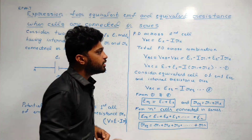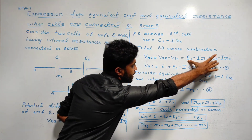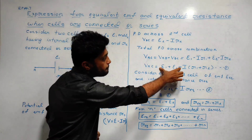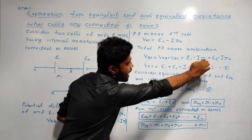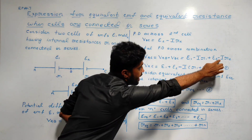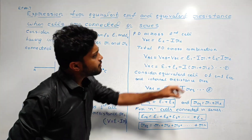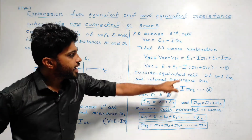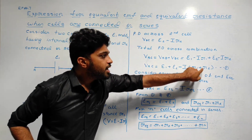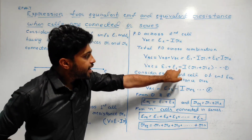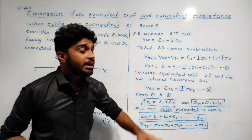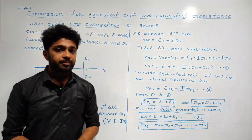VAC is equal to E1 plus E2, minus I times bracket R1 plus R2 bracket close. This is equation number 1.